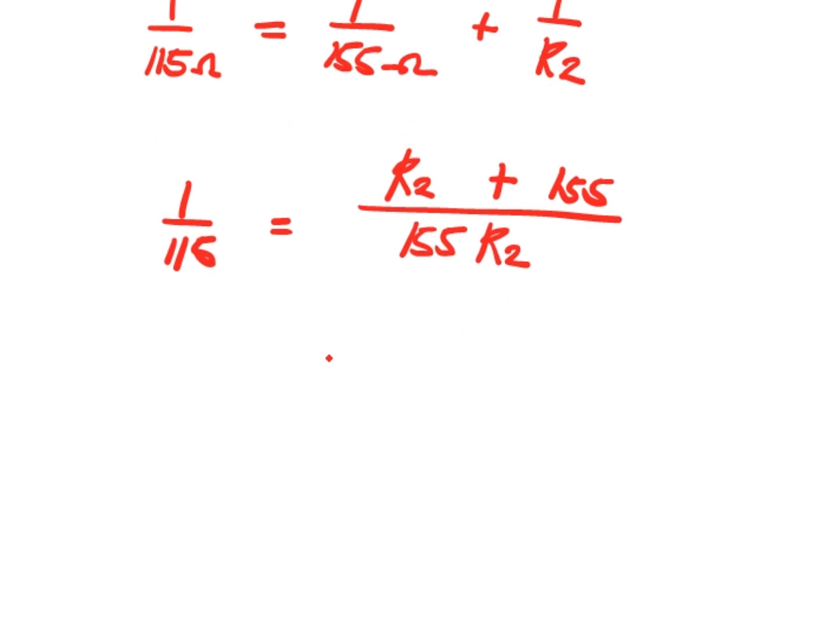By cross multiplication, we will have 155 R2 times 1 equals (R2 plus 155) multiplied by 115.